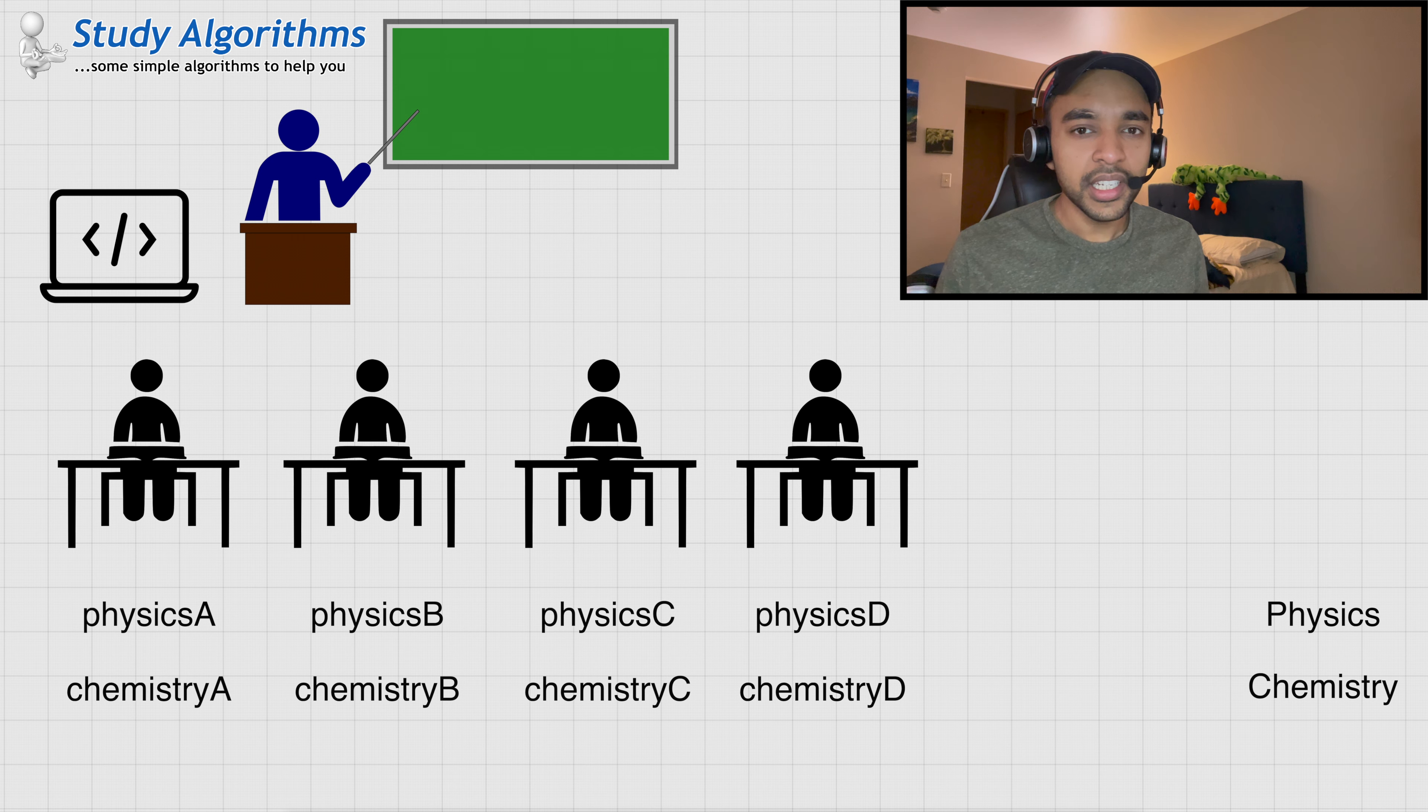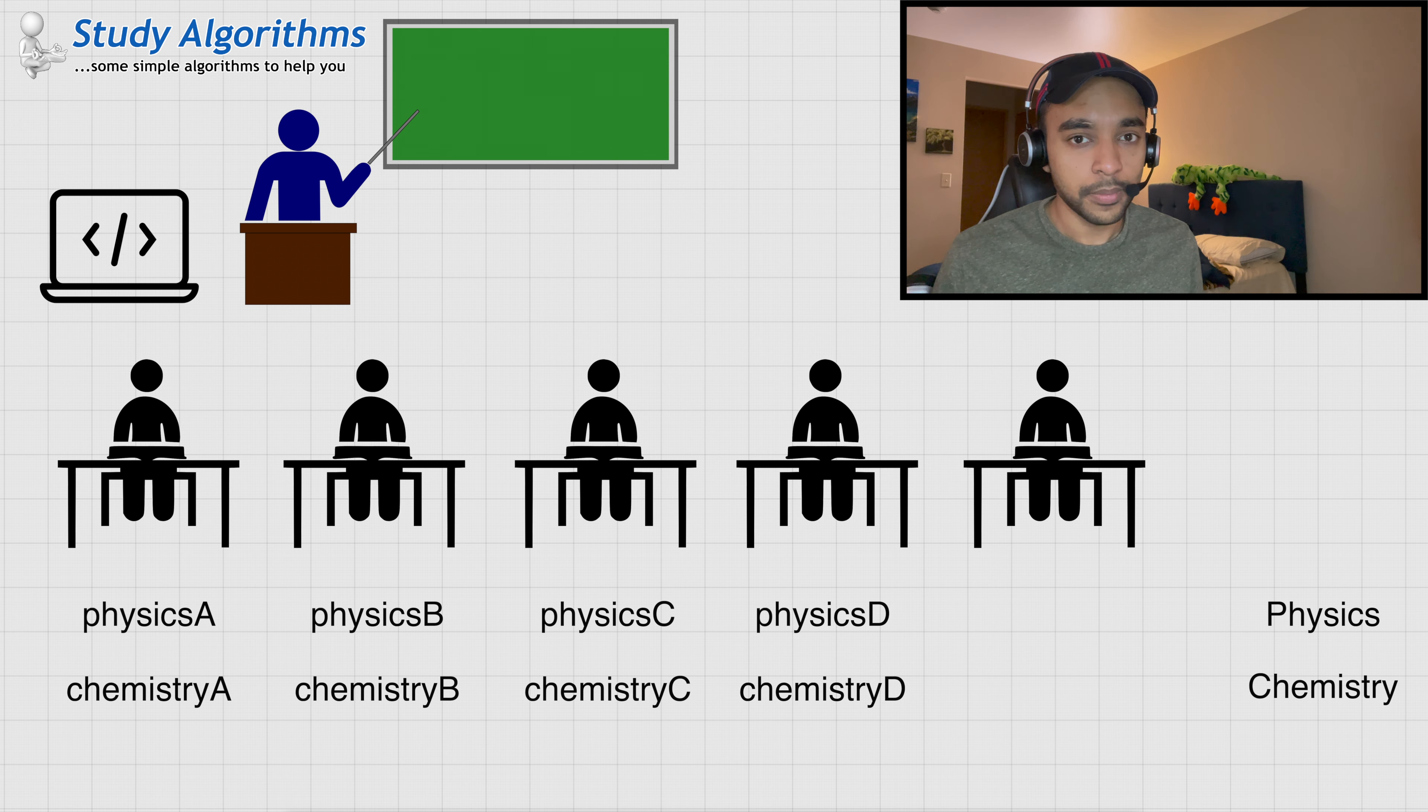Suddenly, in the mid-year, student E joins as well. And you will have to maintain his marks as well. You get a little worried that you are having a lot of variables. But anyway, what you can do is, you can add another variable, physics E, and chemistry E, to store the marks of this new student. Everything looks good. The world is again a happy place.